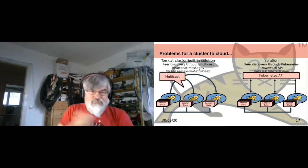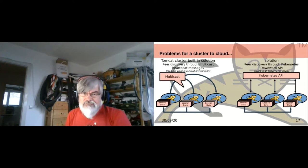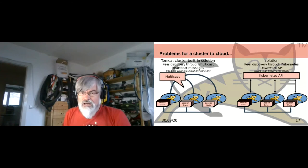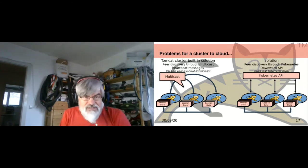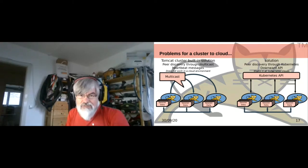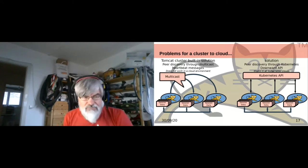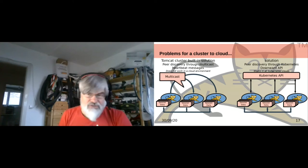The problem is we were using multicast to discover other Tomcat instances. One solution is to use the Kubernetes API to discover other running Tomcat pods. We put them all in the same namespace, then query all the pods running in that namespace to find all the Tomcat instances.